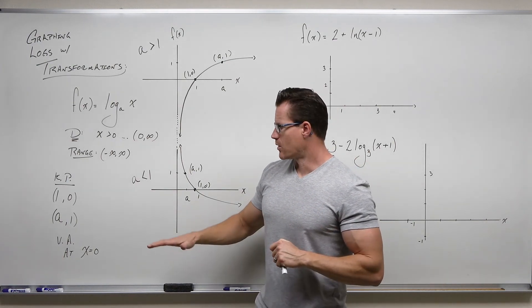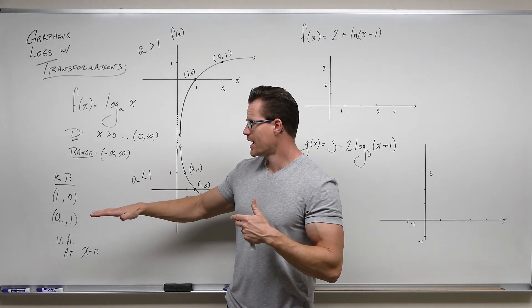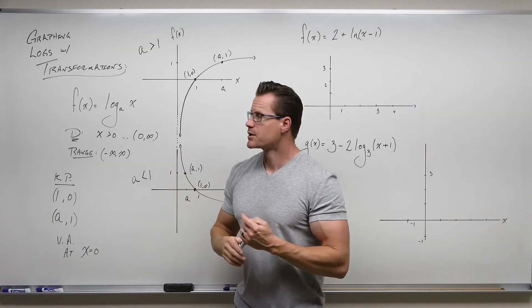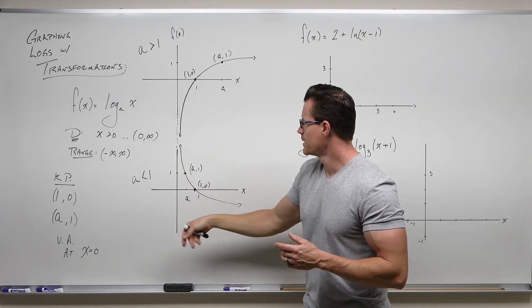And likewise, we have a horizontal asymptote at 0 for exponentials, and therefore we have a vertical asymptote at x equals 0 for our logarithms. So our graphs look about like that. Here's our key points, 1, 0, a, 1. Here's our vertical asymptote.